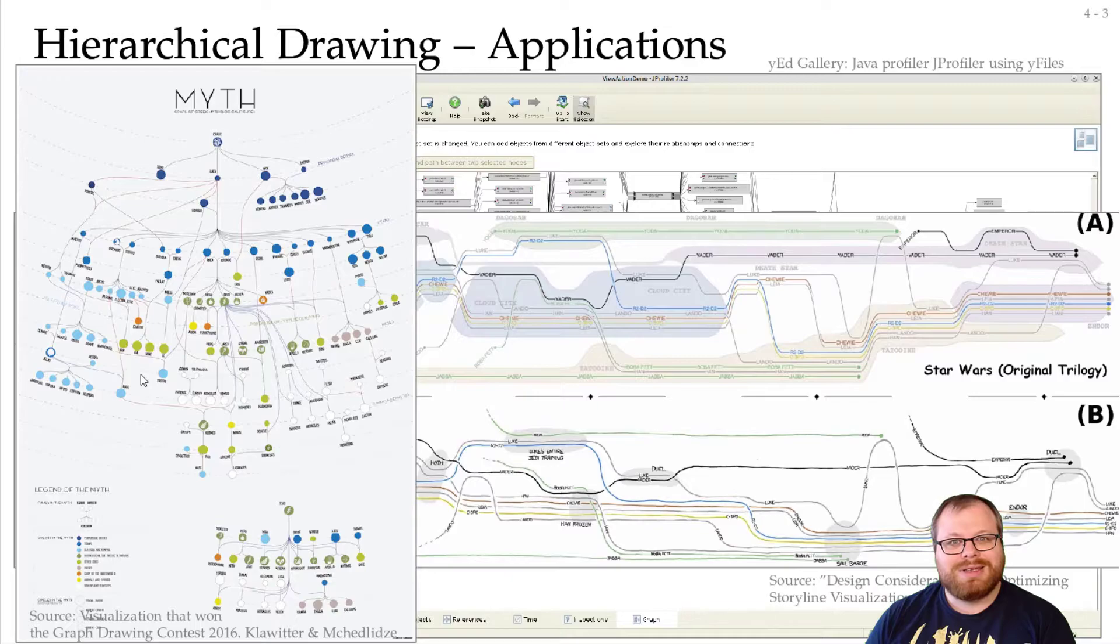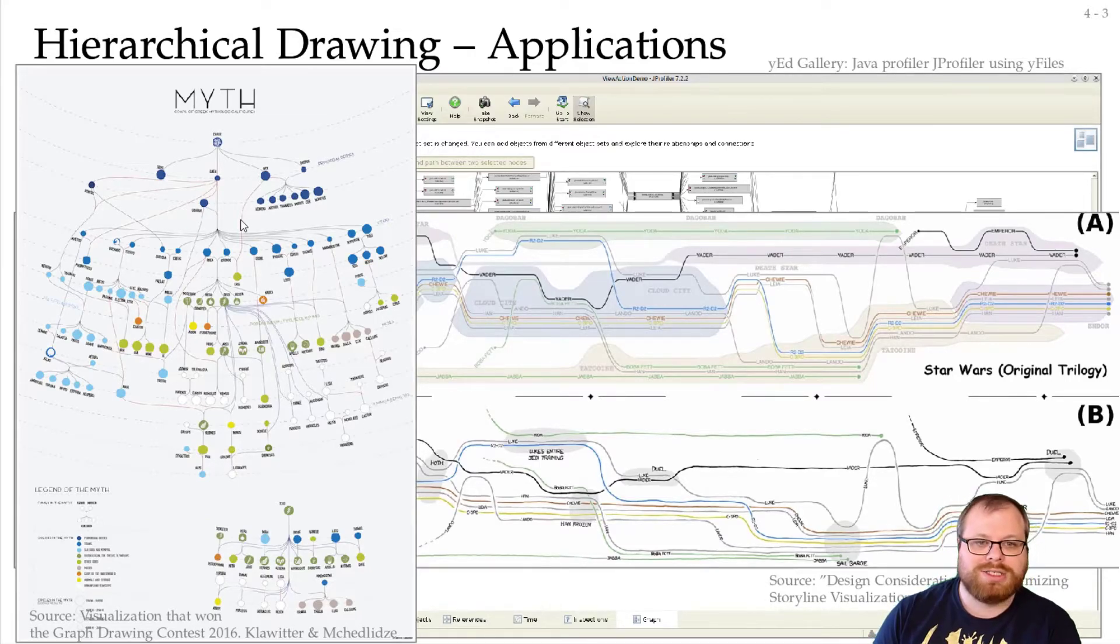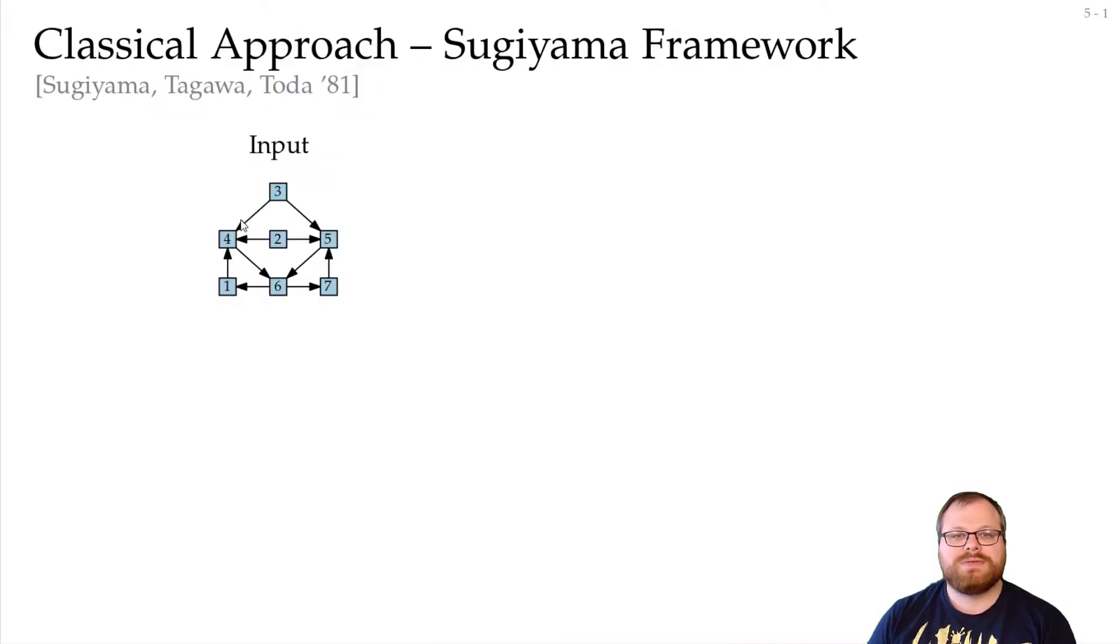And again, this drawing that you've seen in the first few lectures already for trees. There we got these kind of radial layouts, the layered drawings, and those are also hierarchies, except that in the tree we can figure out the direction ourselves. To get such hierarchical drawings, we will use the framework suggested by Sugiyama, Tagawa and Toda in 1981.